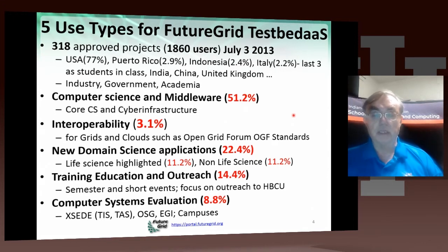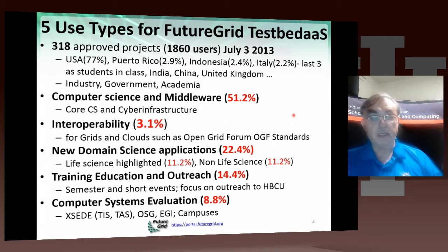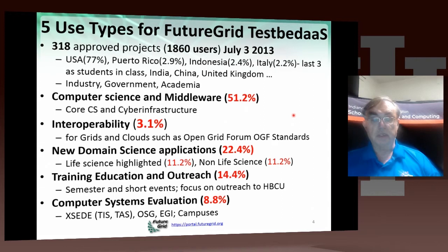Life science tends to be a little bigger than other XSEDE systems because it's a new application area, and therefore there's more testing to be done. 14% of the projects are in training, education, and outreach, but more than 14% of the users are in that area, because classes tend to have more users than research projects. The final category is 8.8%, in the evaluation area, which includes the work we do for XSEDE when testing our software.